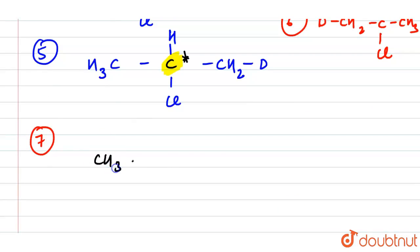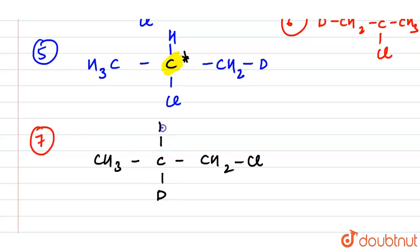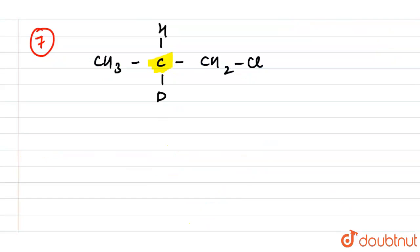For the seventh structure, we have CH₃–C–CH₂Cl, and we interchange the positions of D and Cl. This central carbon is also a chiral carbon.